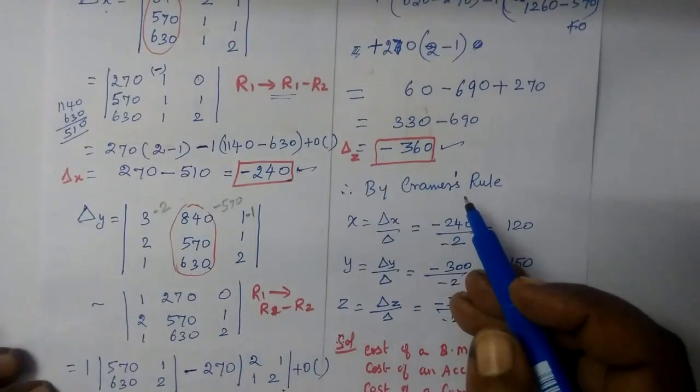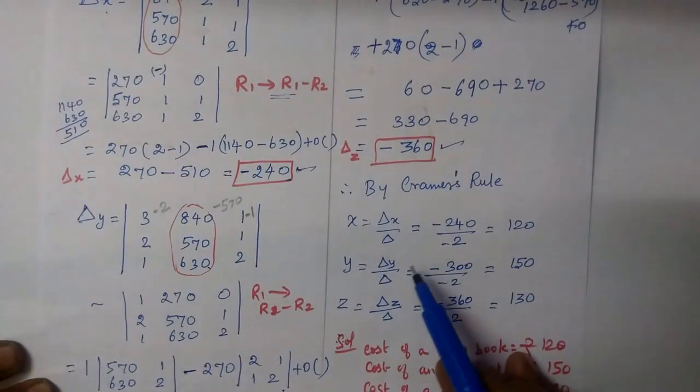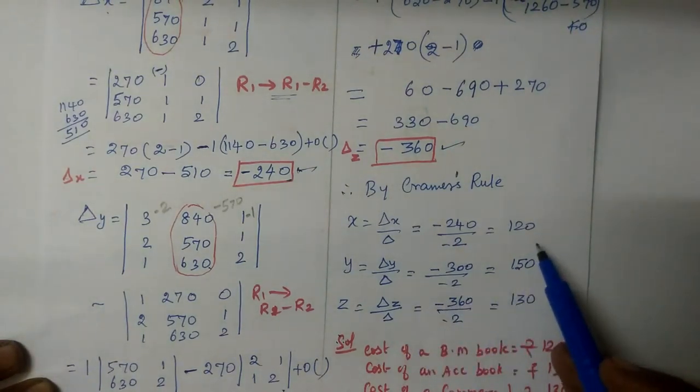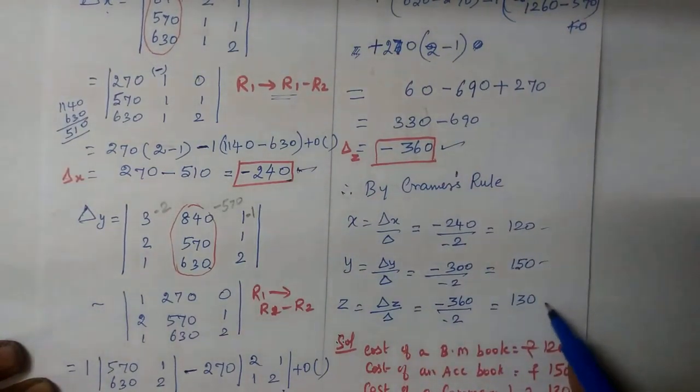So what do we need to do? By Cramer's rule, x value, y value and z value. So del x by delta, del y by delta, del z by delta and substitute. You are getting 120, 150, 130.